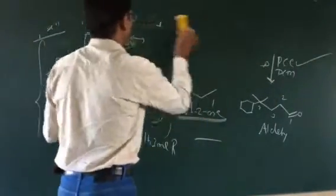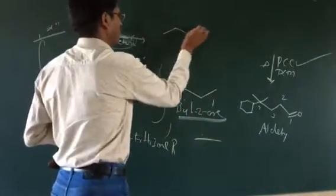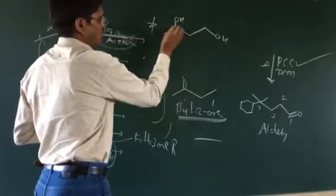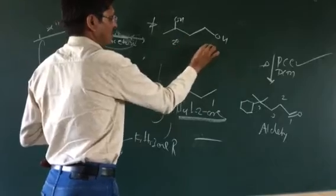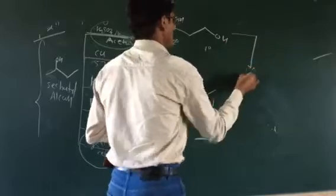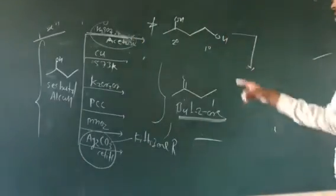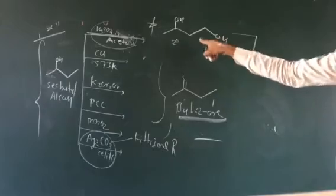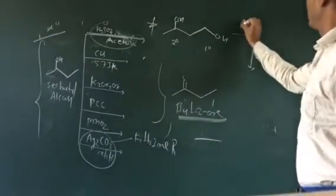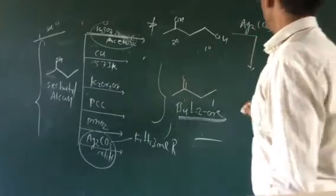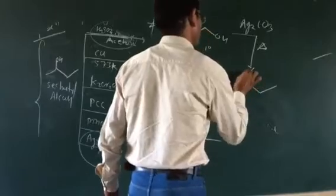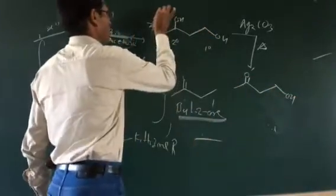If we have a molecule containing both a secondary alcohol and a primary alcohol, selectivity is important. Using Ag2CO3 (silver carbonate) — the Fetizon reagent — selectively oxidizes the secondary alcohol but does not oxidize the primary alcohol. This selectivity is key when both alcohol types are present in the same molecule.